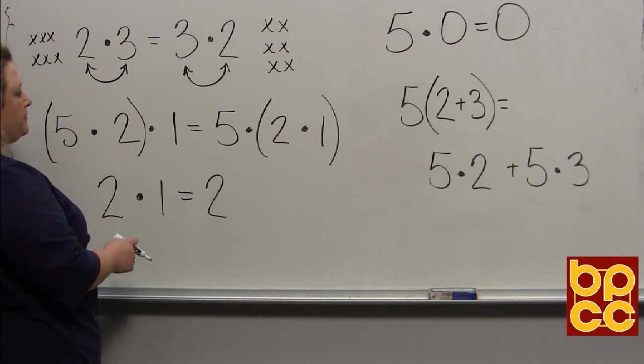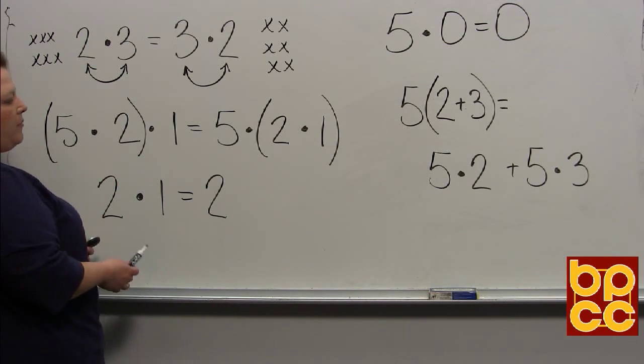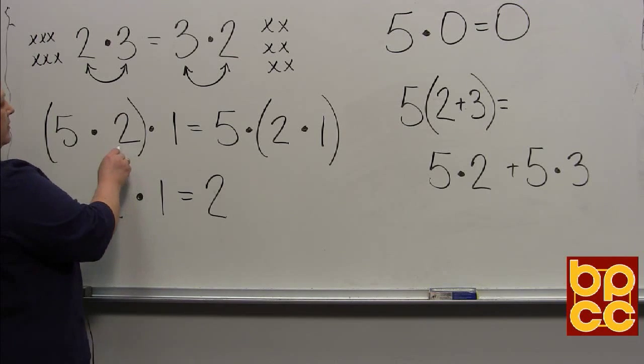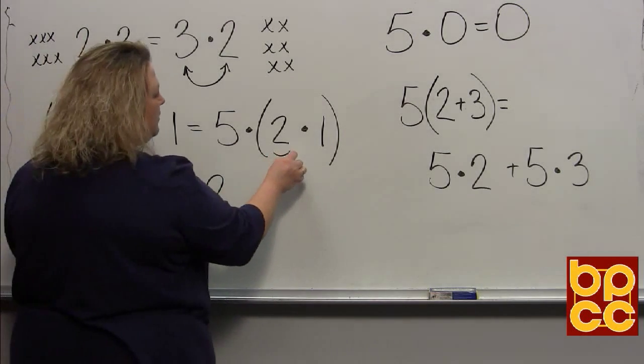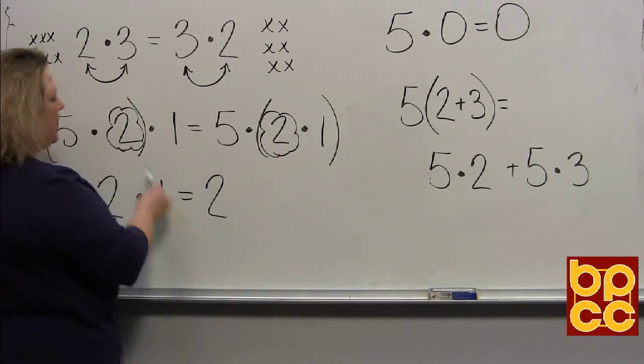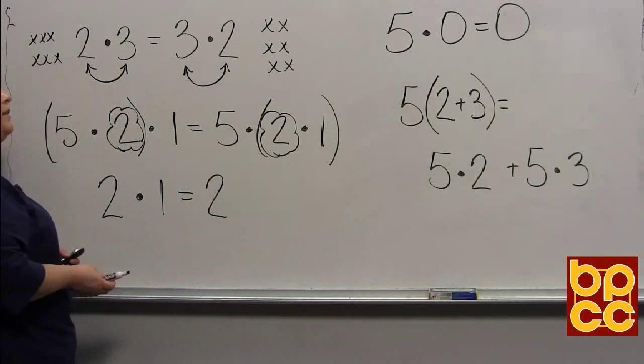The next property is called the associative property. The way I view this is you have the number 2 right here in the middle. You will notice that the order of these numbers is still the same: 5, 2, 1 on the left, and 5, 2, 1 on the right. The only thing that changes is the parentheses, and that is the grouping symbol.